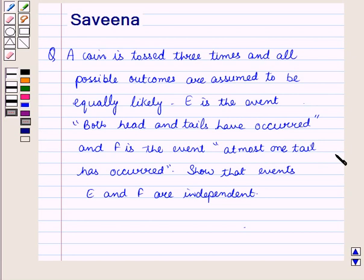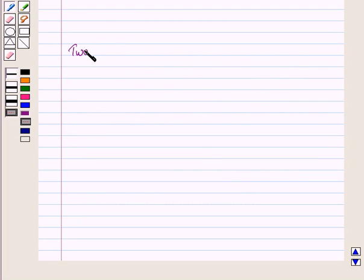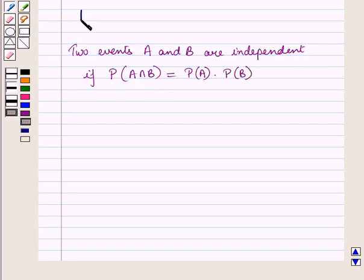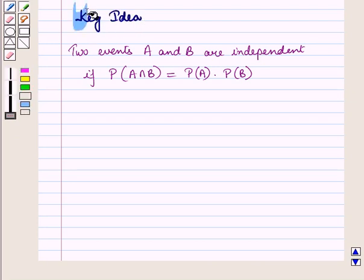Show that events E and F are independent. Now before starting the solution of this question, we should know a result: two events A and B are independent if probability P of event A intersection B is equal to probability of event A into probability of event B. This result will work out as a key idea for solving the given question.